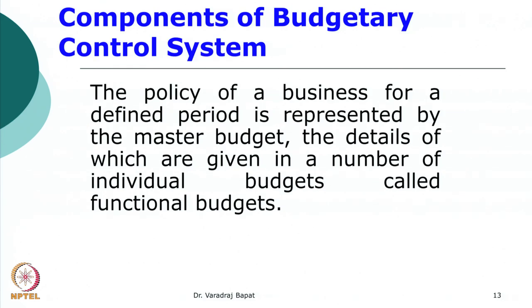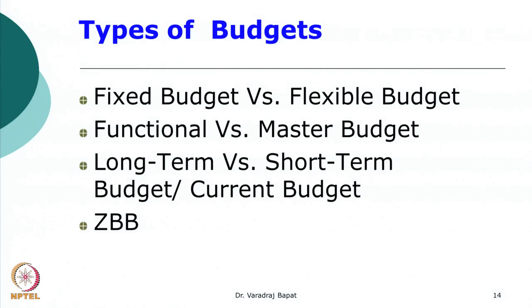Now let us look at the components. The policy of the business for a particular period is a master budget — a budget for the whole company or the whole government. That master budget is divided into functional budgets, which are budgets for a particular function. These are the various types of budgets: fixed versus flexible, functional versus master, long term versus short term, and the last type is zero base budget.